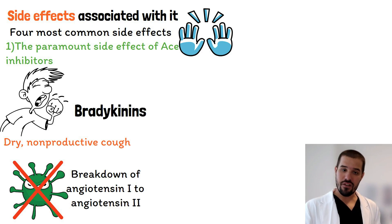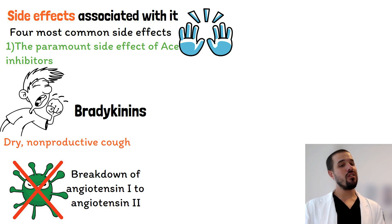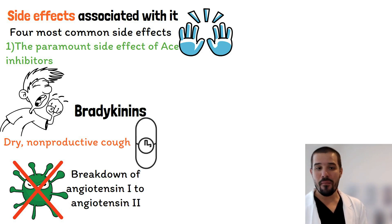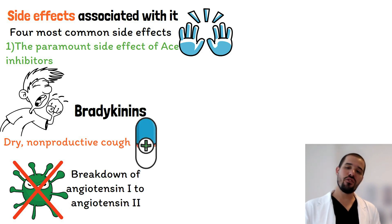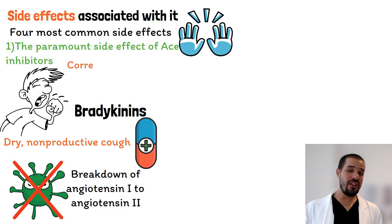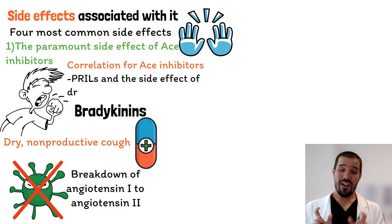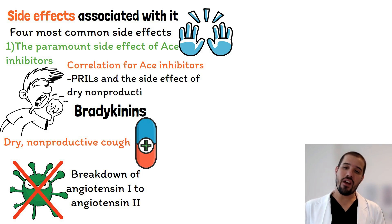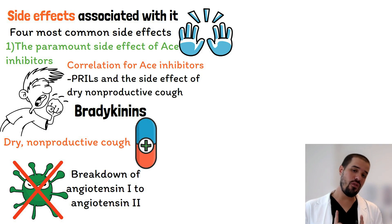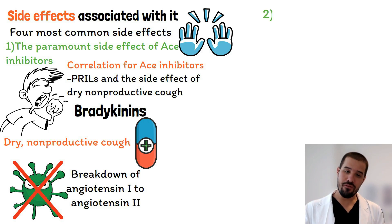Bradykinins are a specific mediator inside our body, and the only way to abolish this cough is by switching the patient to an alternative medication. Make the correlation: ACE inhibitors — the PRILs — and dry non-productive cough. This is a very common topic for nursing school.